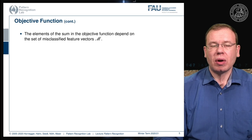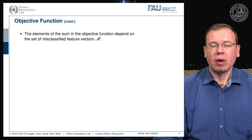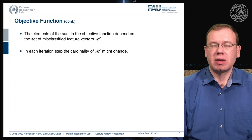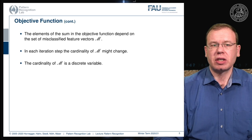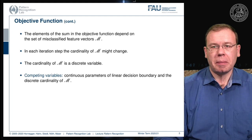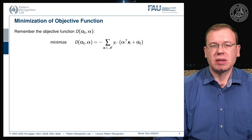The elements of the sum depend on the set M of misclassified feature vectors, which can change in every iteration. Every time we change the decision boundary, we change the set of misclassified samples. This is a significant problem because M is a discrete variable, giving us competing continuous parameters of the boundary and the discrete cardinality of M.